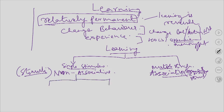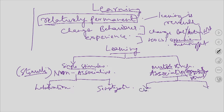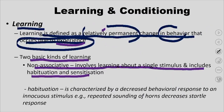Within single stimulus learning are two forms — habituation and sensitization. Within the associative multiple stimulus form, where people learn to associate multiple stimuli together, there are classical conditioning, instrumental conditioning, and complex or social learning. This is what learning is all about.